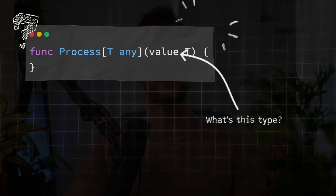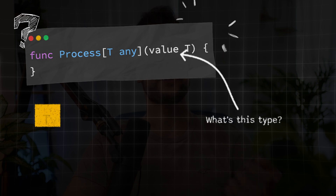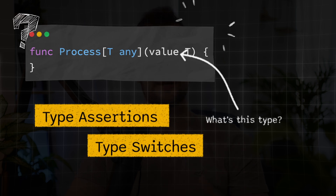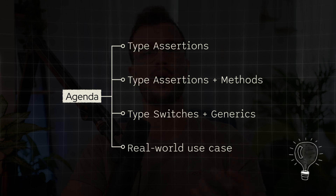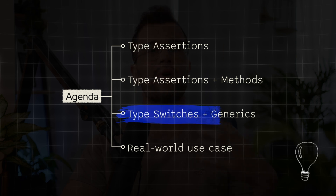Have you ever struggled with figuring out the type of a variable which is in the end an interface? Type assertions and type switches are your go-to tools when it comes to handling different logic based on the type of a variable. They are really powerful tools to determine the type of a variable stored in an interface. We'll have an in-depth look into type switches, type assertions, and a powerful combination of type switches and generics in Golang.